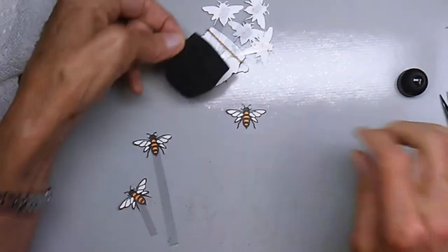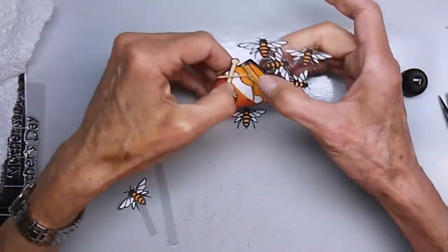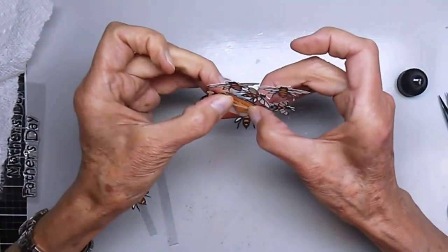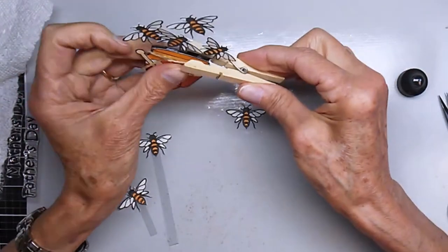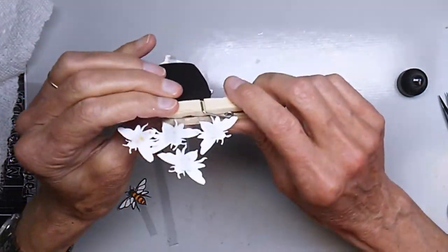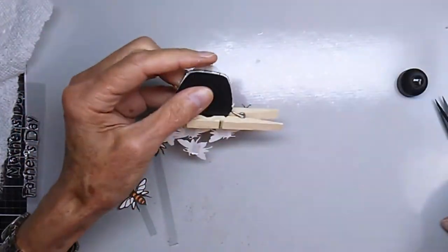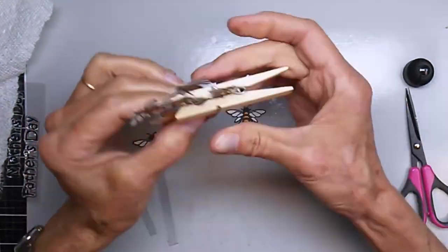I also decided here to add a black background to kind of encase the acrylic strips in. I'm just using a clothespin here to hold it shut until it dries.